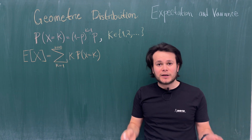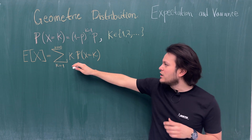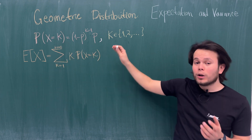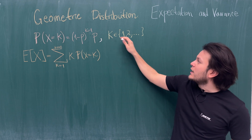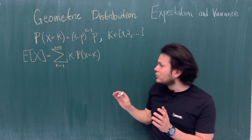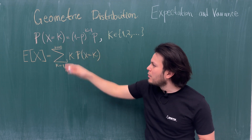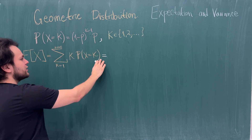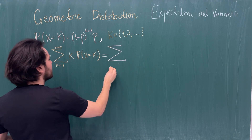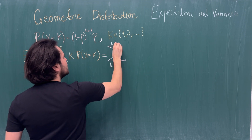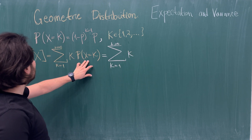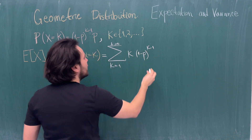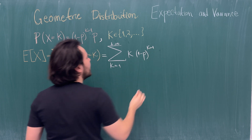To find the expected value of x, we use the formula for a discrete random variable. k goes from 1 to plus infinity because all possible values for x are natural numbers greater than or equal to 1. We replace the PMF and compute the series: the sum from k=1 to infinity of k · (1-p)^(k-1) · p.